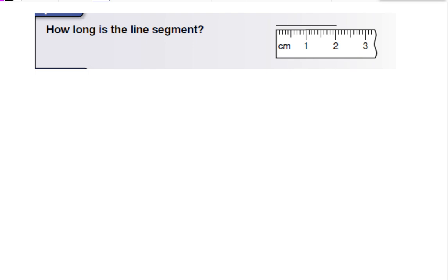This line segment is measured in centimeters. With centimeters, each of the little tick marks in here is 1 millimeter. And there are 10 millimeters in 1 centimeter. So, there's 10 marks between the 1 and the 2.